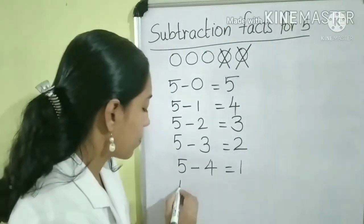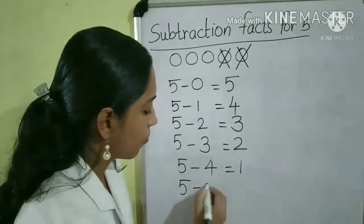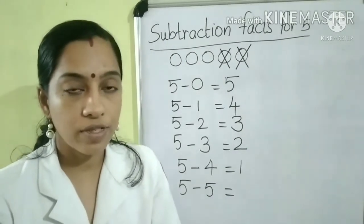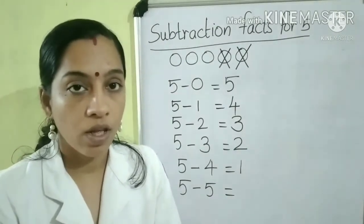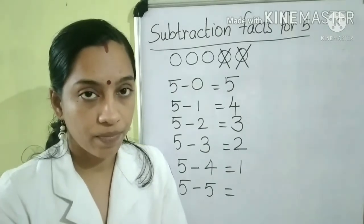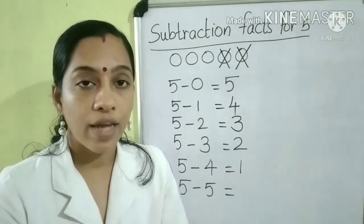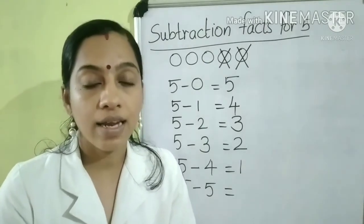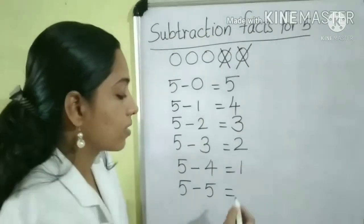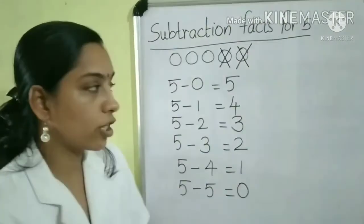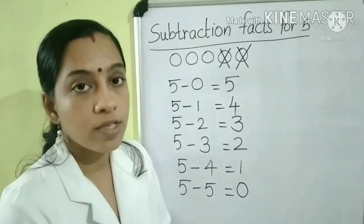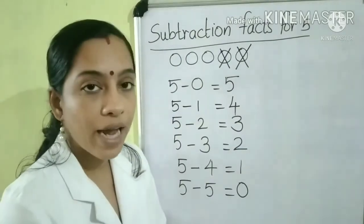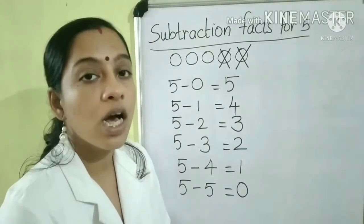The last one: we have to subtract 5 minus 5. What will be the answer if we subtract 5 from 5? We know the property: if any number is subtracted from itself, the answer is 0. That is, 5 minus 5 is equal to 0. So children, these are the subtraction facts for the number 5.